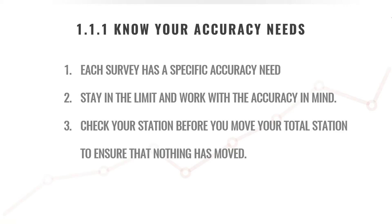You want to make sure that the prism constant you are using is spot-on correct. To do this, use a baseline — get two points, measure the distance between them with a tape measure, then set up your tunnel station over one point and measure to the other. Check that distance to make sure your tunnel station prism has the correct constant.